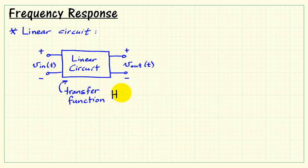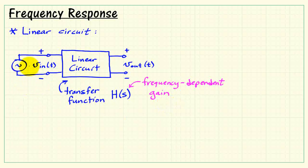The linear circuit can be described by a transfer function called H of S, and this embodies the frequency-dependent gain as well as the phase change that can get applied as the signal moves from the input to the output.